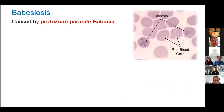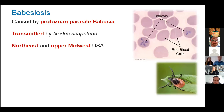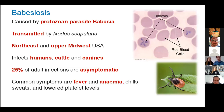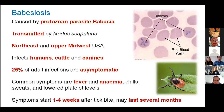Ticks are also able to carry parasites. Babesiosis is caused by the protozoan parasite Babesia, which is a malaria-like parasite that attacks the red blood cells. Babesia is transmitted primarily by a relative of the deer tick, Ixodes scapularis, which is found across the northeast and upper midwest USA — and that's therefore where this parasite tends to be very common and affects many more people. Many people who are infected will likely experience no symptoms, or at most mild flu-like symptoms such as fever, anaemia, chills, and sweats. Symptoms occur around one to four weeks after first being bitten by an infected tick, and if left untreated, can last several months.